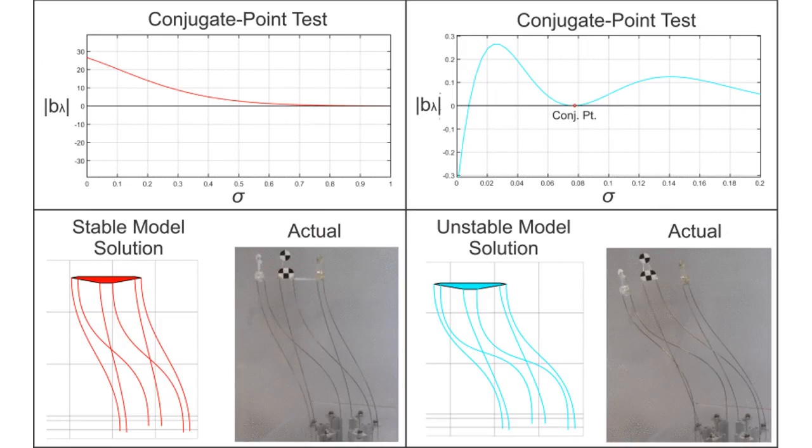We validate our approach experimentally on a six-degree of freedom parallel continuum Stewart-Gough platform. This figure shows the robot before and after instability. On the right, the boundary condition partial derivative matrix is singular along the interval, indicating instability.